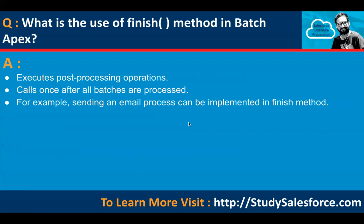What is the use of the finish method in Batch Apex? It executes post-processing operations and is called once after all batches are processed — similar to the start method, it executes only once. The execute method runs depending on the number of batches, whereas start and finish methods run once each. A real example is sending an email, which can be implemented in the finish method.